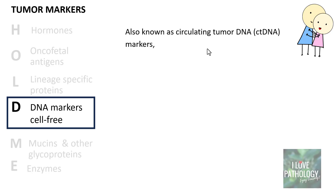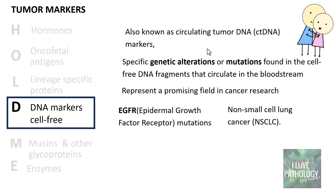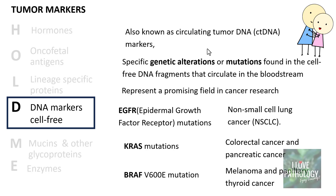Moving on to D — DNA markers which are cell-free, also known as circulating tumor DNA markers. Most tumors arise from genetic alterations, and these mutations can be found in DNA fragments circulating freely in the bloodstream. This concept of identifying mutations in cell-free DNA fragments represents a very promising field in cancer research. Common examples include EGFR mutations, specific for non-small cell lung cancer; KRAS mutations, significantly found in colorectal and pancreatic cancers; and BRAF V600E mutation, typically seen in melanomas and papillary thyroid cancers.